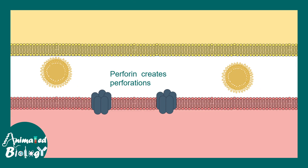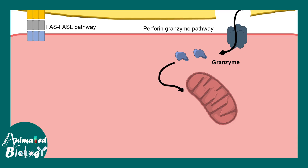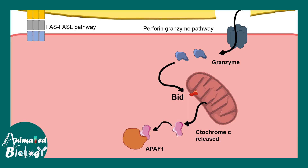Perforin creates perforations in the host cell membrane, forming channels through which granzymes can pass. The granzymes that enter alter mitochondrial membrane permeability, activating apoptotic proteins like BID. BID ultimately causes cytochrome c to leak from the mitochondria. In the cytosol, cytochrome c interacts with Apaf-1, leading to activation of inactive caspase 9, and ultimately caspase 3 — the executioner caspase.